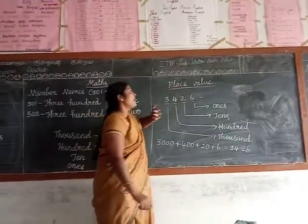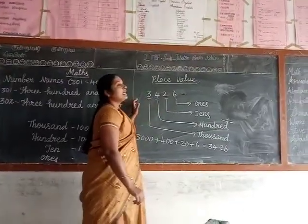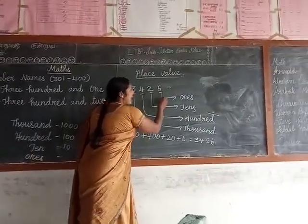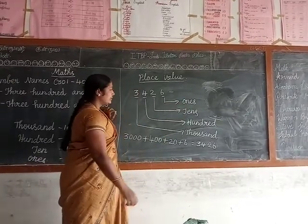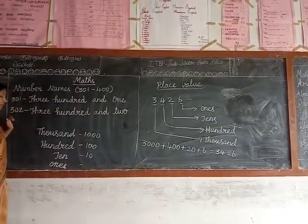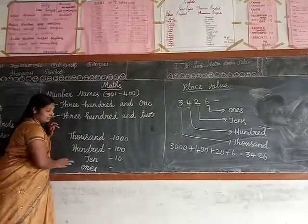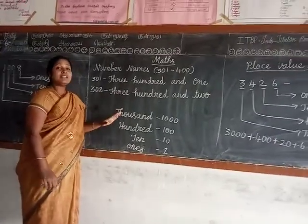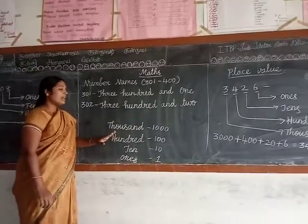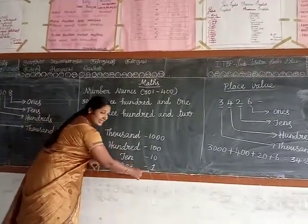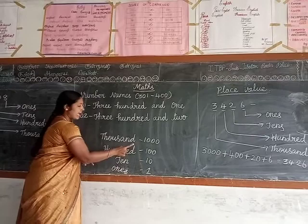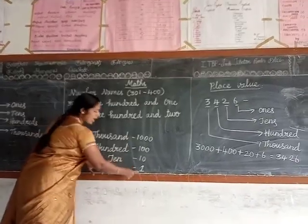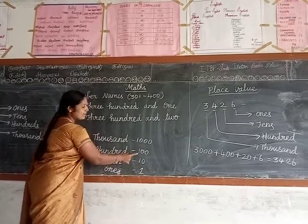What does it mean by place value? When you go from left to right, the first position is 1. Let's see the value of each position. The positions are: 1, 10, 100, 1000. So what is the first position? 1, then 10, then 100, then 1000.